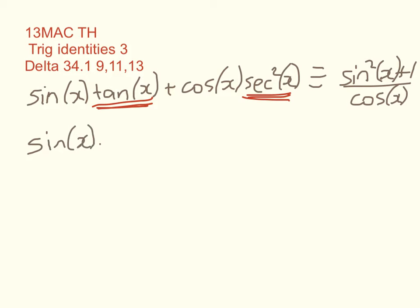Okay, so sin x times tan is sin x over cos x plus cos of x. Now, what's sec squared? Well, sec is 1 over cosine, so that's times 1 over cos squared of x.